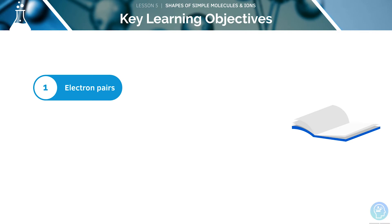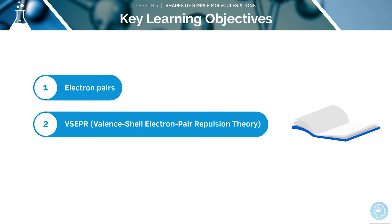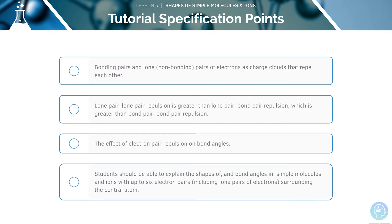Here are the key learning objectives for this lesson. First, we will look at electron pairs, and then we will cover VSEPR theory. Here are the AQA specification points for this tutorial. Feel free to pause the video now and read through them before we begin.